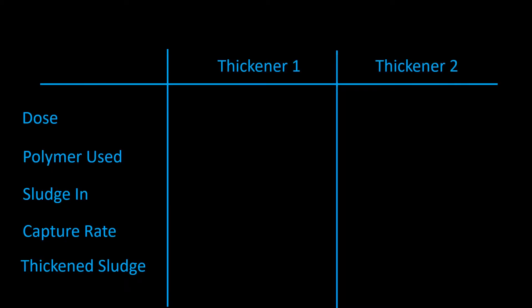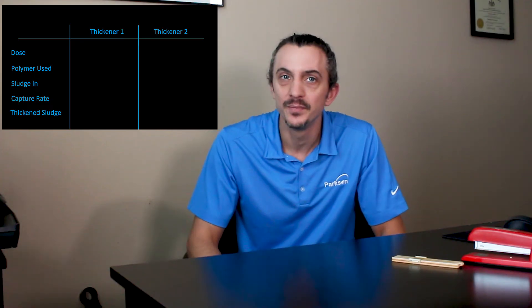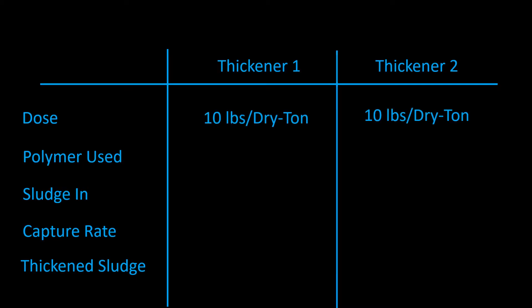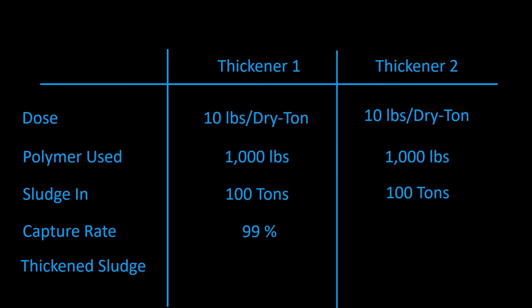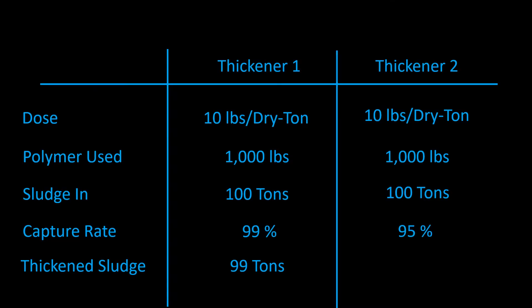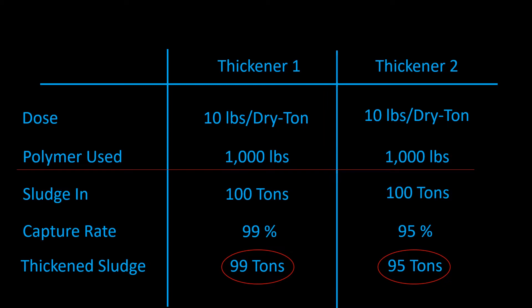Why is this an issue? Here's an example. Say we have two thickeners. Both require the same polymer dose as traditionally calculated to reach 5% thickened solids — we'll say 10 pounds per dry ton. So evaluating these thickeners side by side would show that they use the exact same amount of polymer to thicken sludge. However, let's say one of the thickeners has a screening material that retains a lot of solids and has a capture rate of 99%, so 1% of the solids fed into the thickener are lost during the thickening process. And the other thickener is designed such that it gets a capture rate of 95%. In reality, one thickener is producing 4% less thickened sludge at the same polymer cost, yet is considered equal under our current standard of calculation.